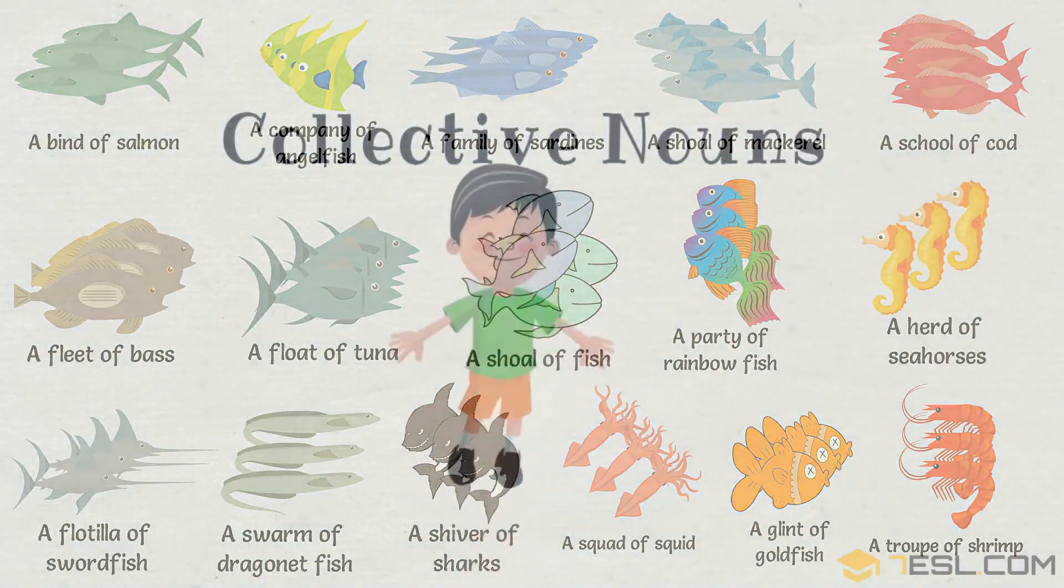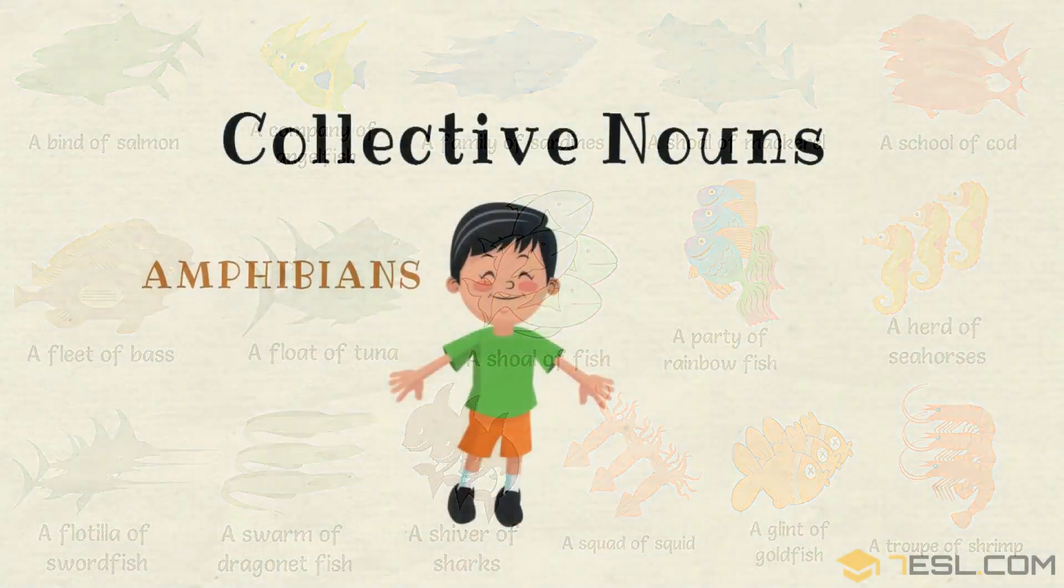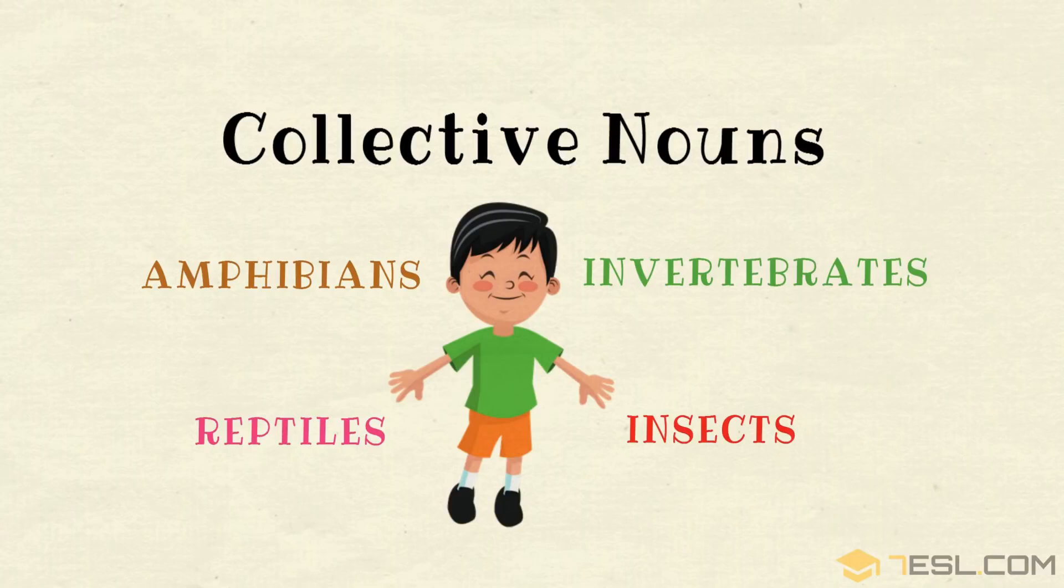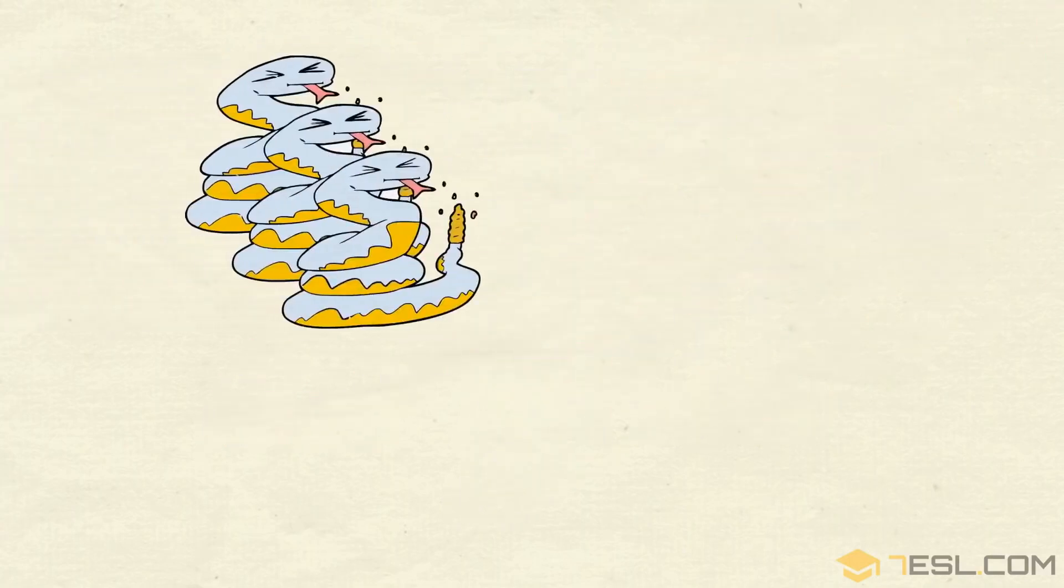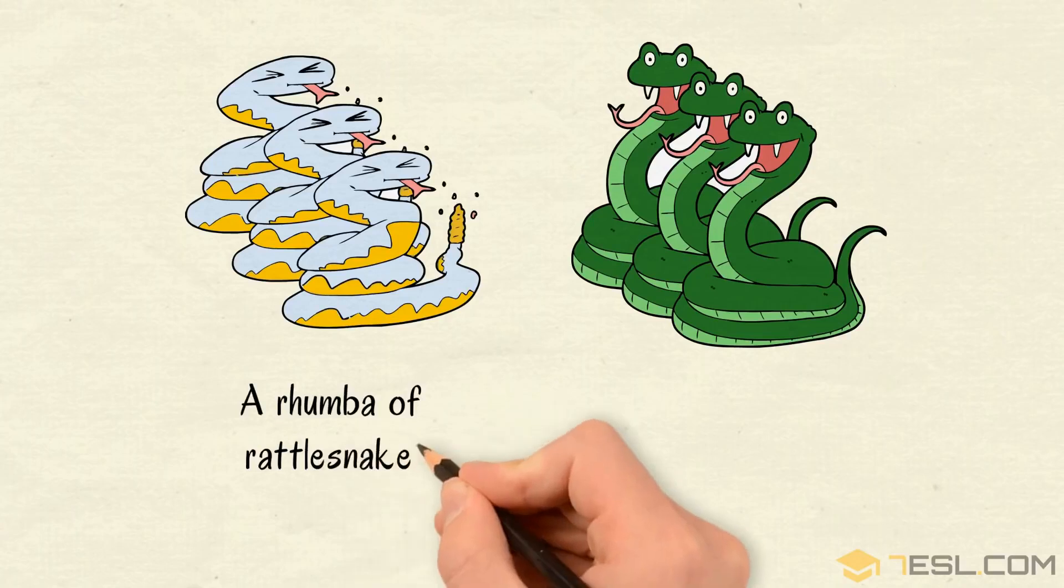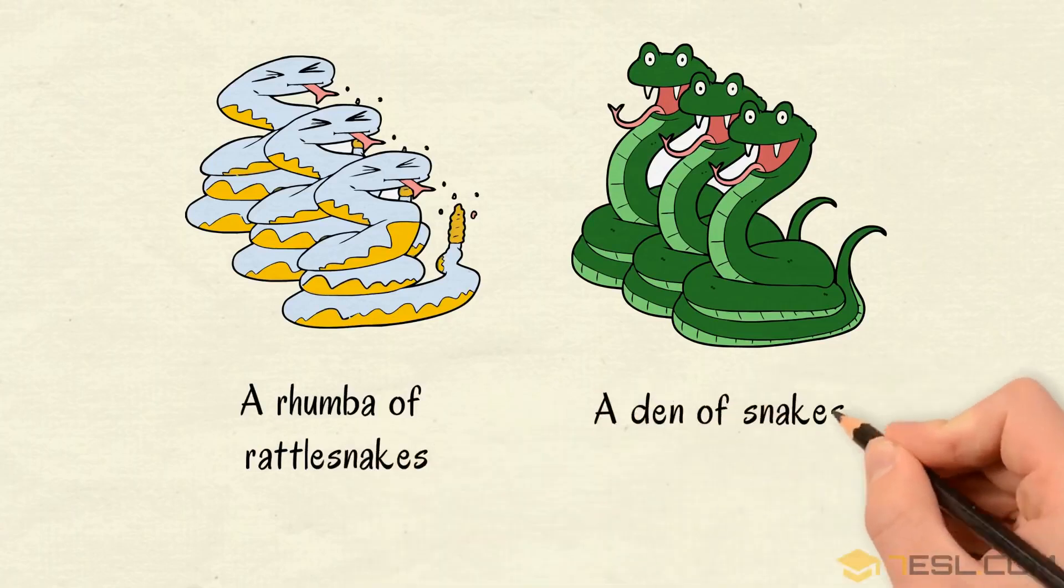Collective nouns for amphibians, reptiles, invertebrates, and insects. A rumba of rattlesnakes, a den of snakes.